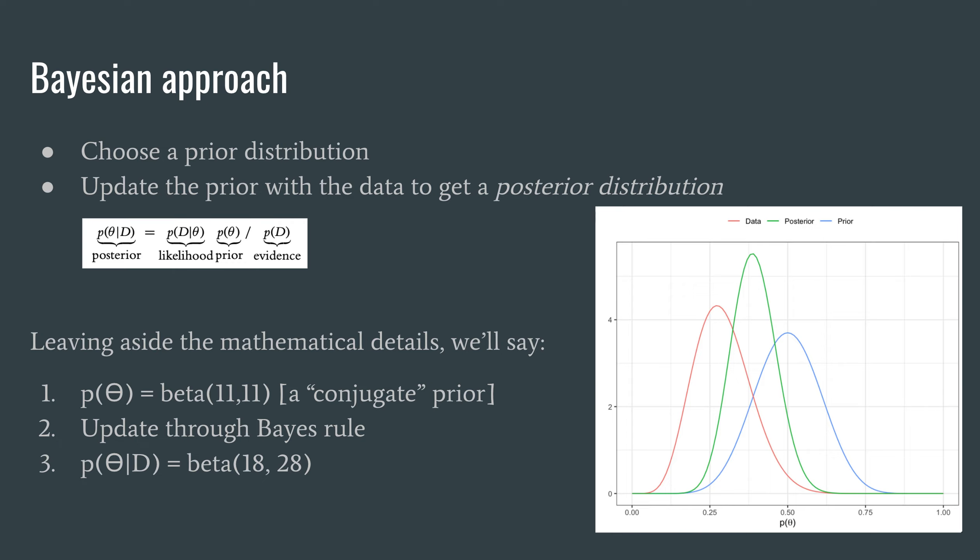Leaving aside the details because this brief introduction is focusing on how the interpretation is different, we can say that the prior is this beta distribution, beta(11, 11). Then we get a posterior distribution which is also a beta distribution with the parameters 18 and 28. We can see on the plot on the right the posterior distribution.